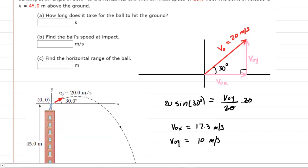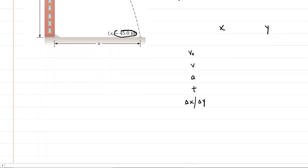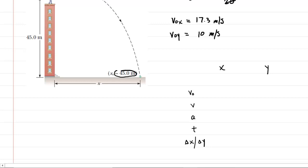Once we have those components, the next thing to do is fill the given information into a chart to keep it organized. In the x direction, the initial velocity is 17.3 meters per second. In the y direction, it was 10 meters per second. In the x direction, the acceleration is zero because there are no forces acting horizontally — no gravity, for example. But in the y direction there is gravity, so the acceleration is negative 9.8 meters per second squared.